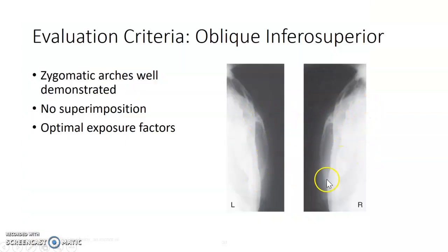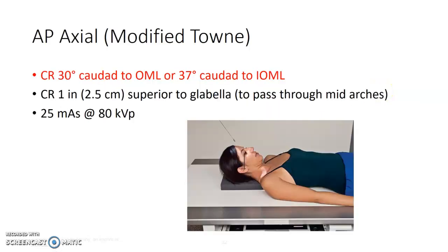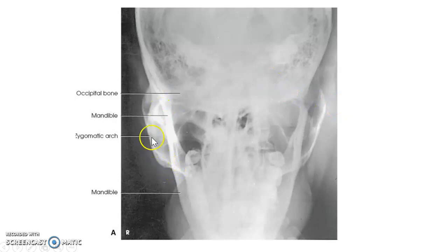You want the arch open and not superimposed — a beautiful image shows it nice and wide open. There's also a modified Towne view, really similar to the skull Towne, except the central ray enters one inch superior to the glabella and passes through the mid-arches. Here you can see the zygomatic arches clearly on both sides in a well-penetrated image.